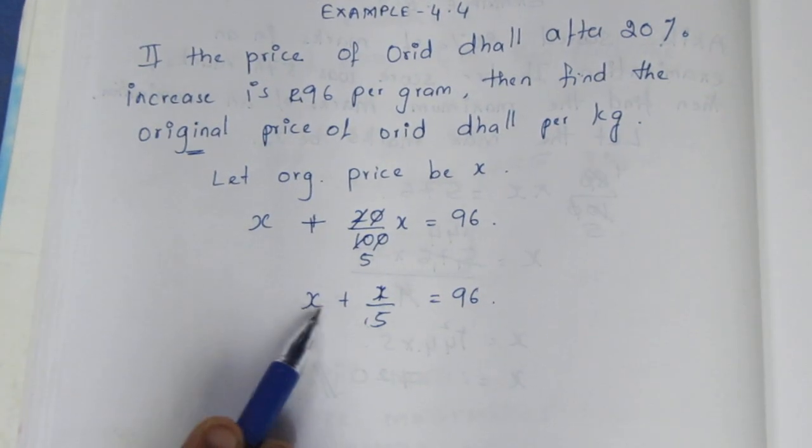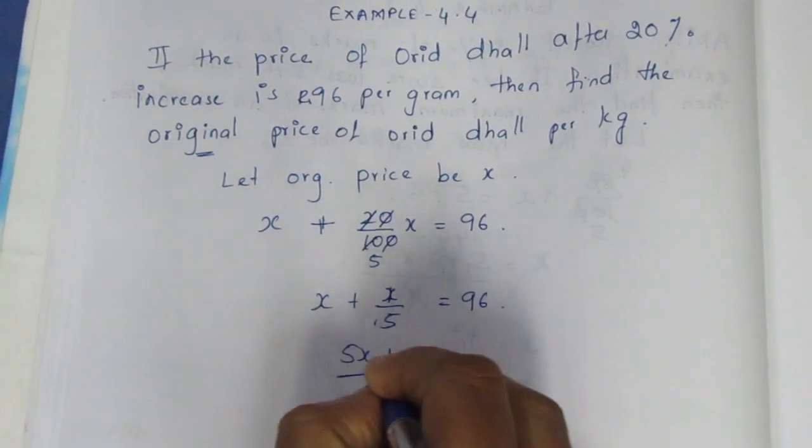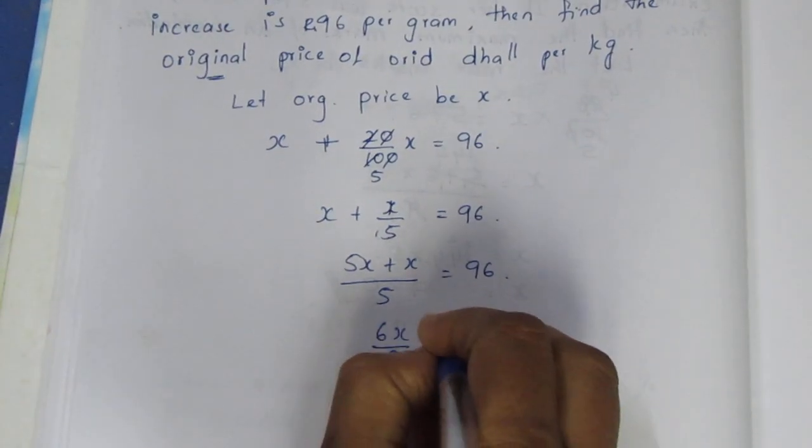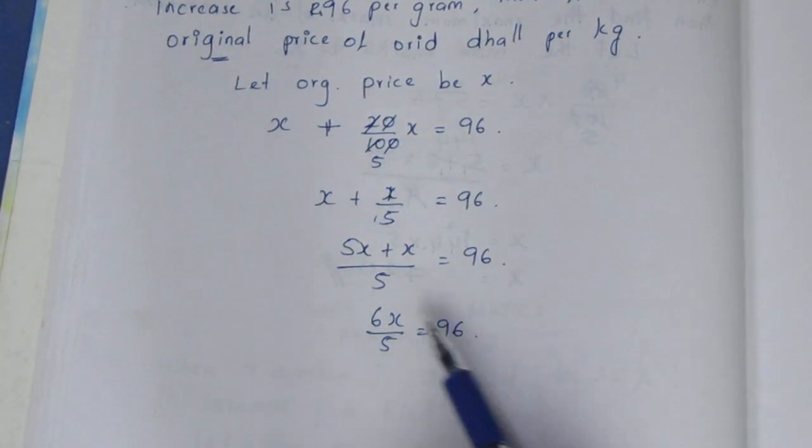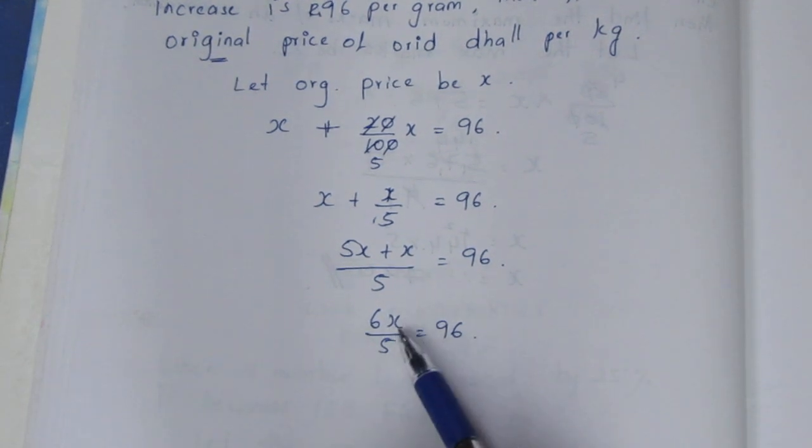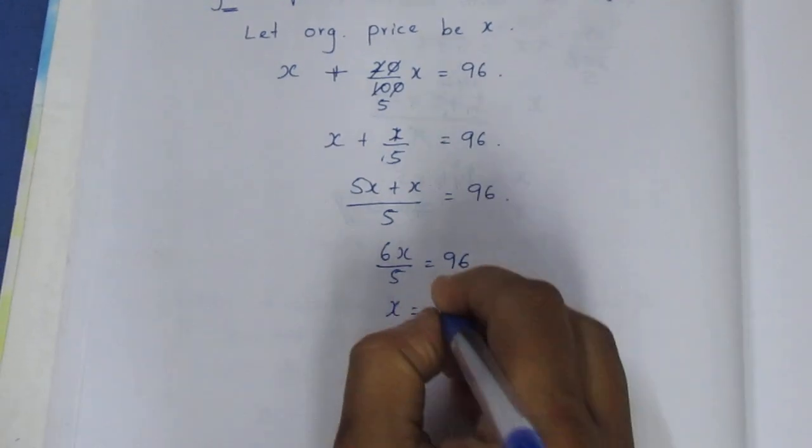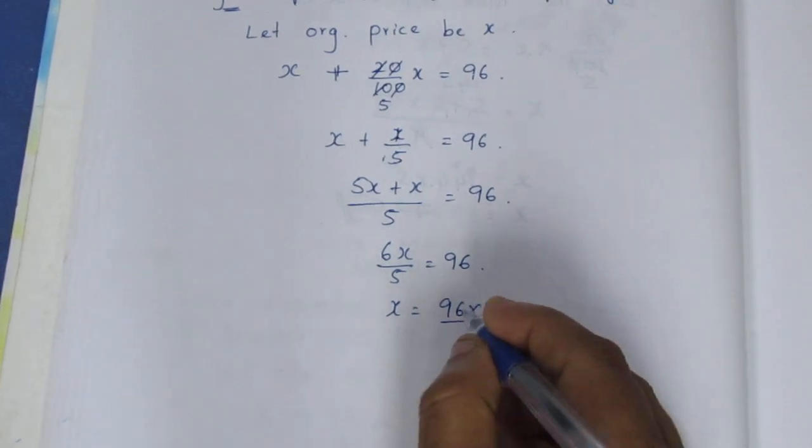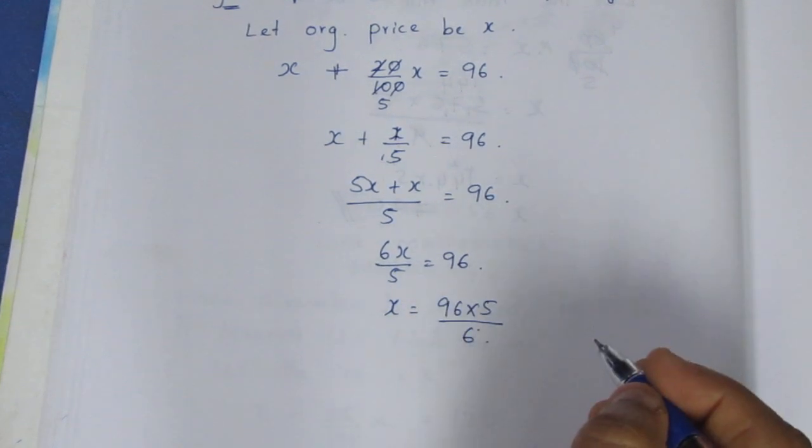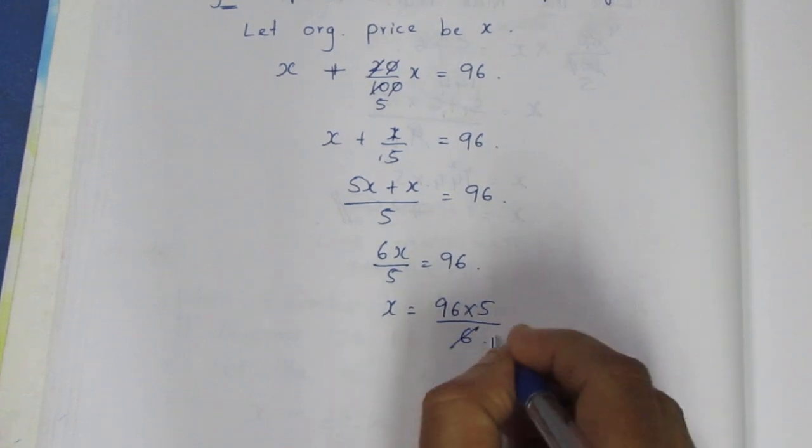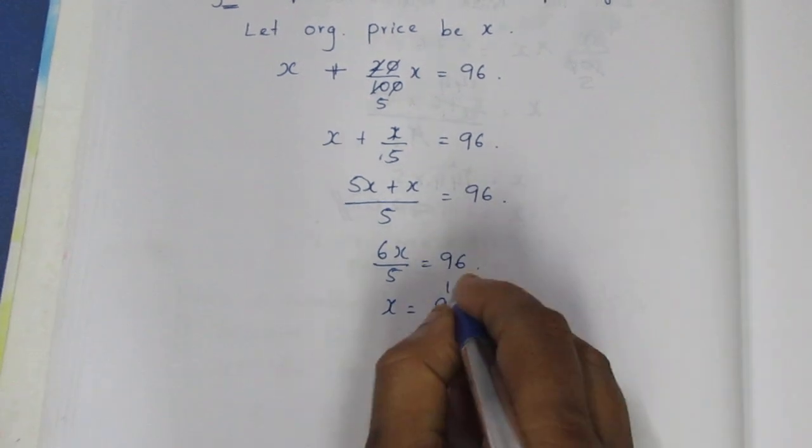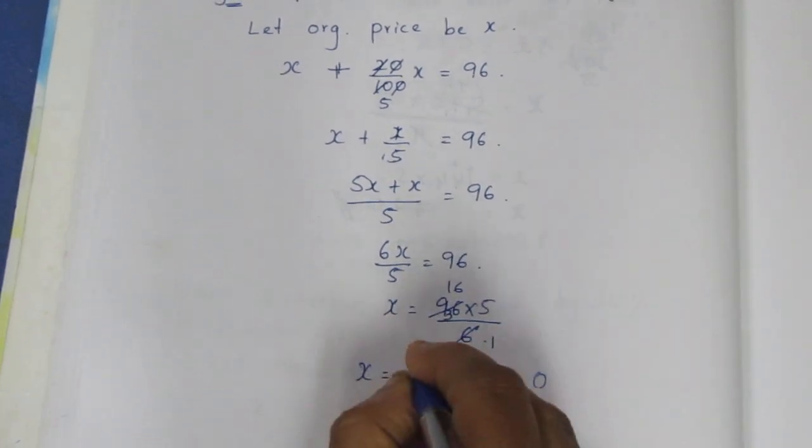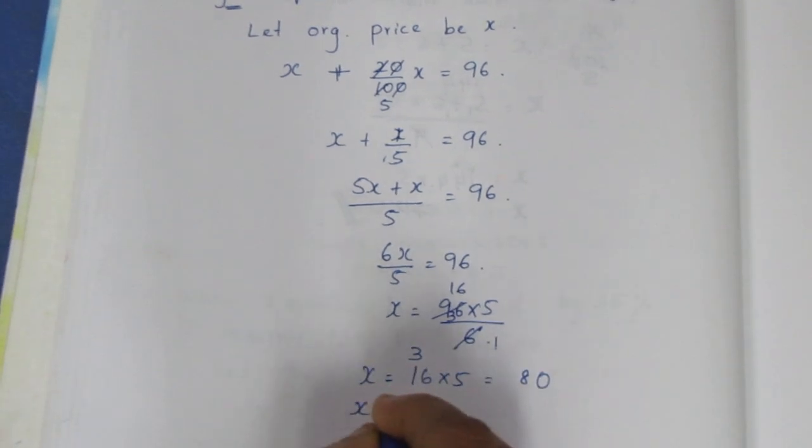Multiplying both sides by 5/6, x equals 96 times 5/6, which is 16 times 5. Therefore x equals Rs. 80.